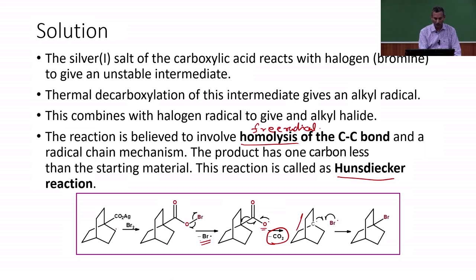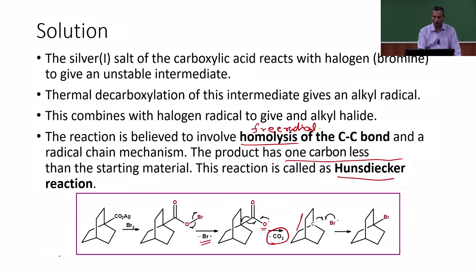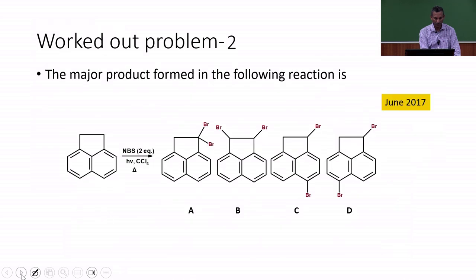This reaction is called the Hunsdiecker decarboxylation reaction. This reaction involves homolysis of the C–C bond, which is generally a free radical process. So here we have a free radical intermediate in this reaction. The starting material has one fewer carbon atom in the end product — there is a loss of one carbon — and this reaction proceeds via a radical intermediate.